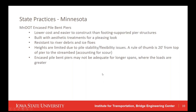Comparing to Minnesota: encased pile-bent piers are lower cost and easier to construct than footing-supported pier structures. They allow aesthetic treatments for a pleasing look. They are used similarly to Iowa where river debris and ice flow are expected. The height of encased pile-bents is limited — the rule of thumb is 20 feet from the top of the pier to the stream bed, accounting for scour. Encased pile-bent piers may not be adequate for longer spans where loads are greater, similar to what we're seeing in Iowa.